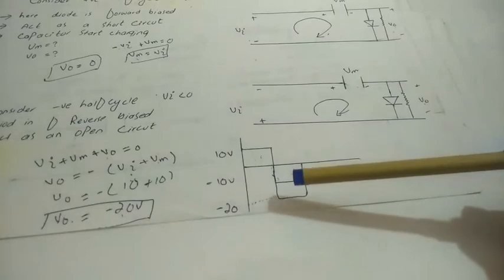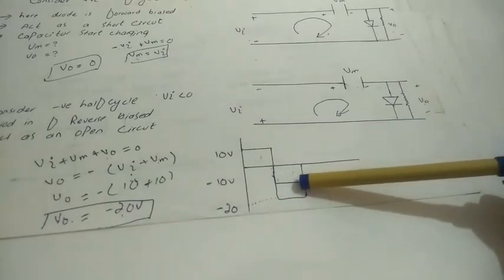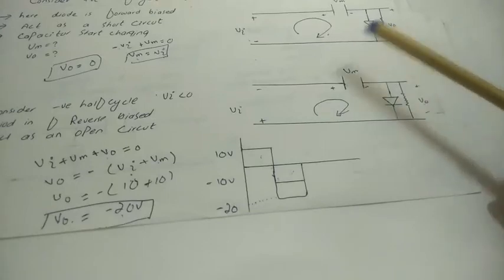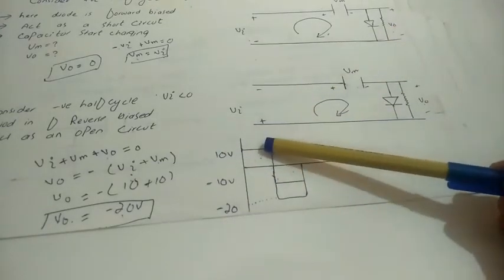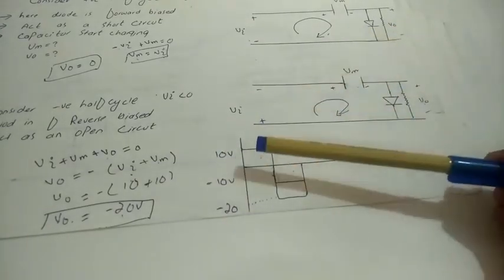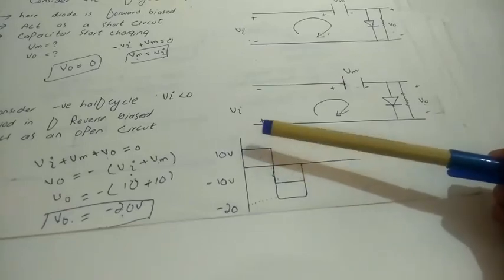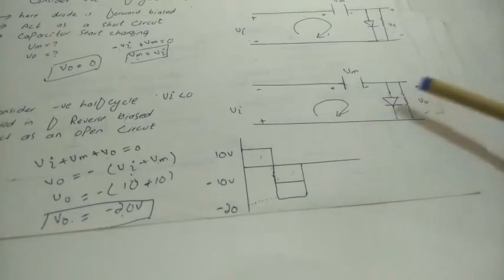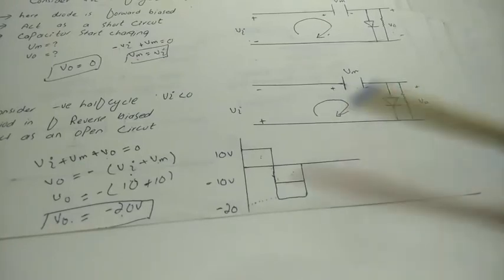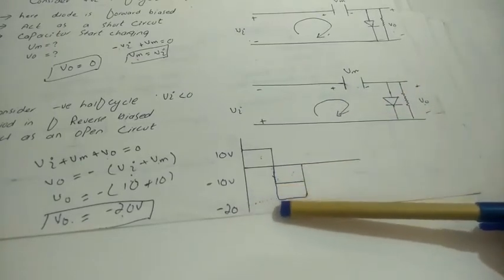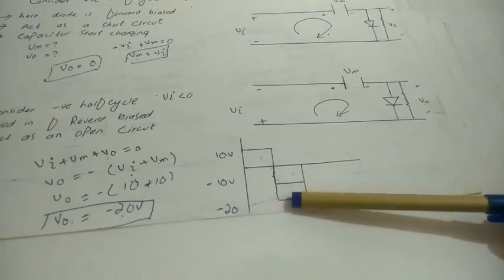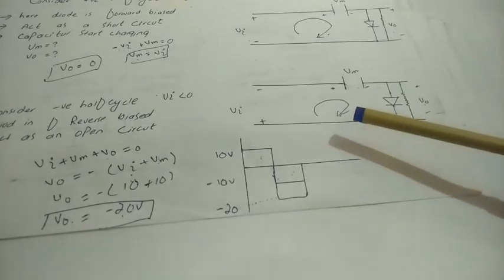Here we have just added a DC value and nothing else has changed. The positive cycle output and the negative cycle output - we just add to each of these values. So the DC value is added and the shape of the waveform remains the same. This is our lecture on clamper circuit - it has two types: negative clamper and positive clamper.